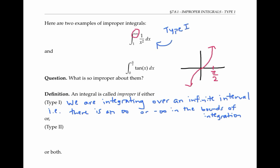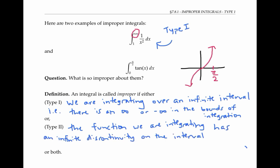A type two improper integral occurs when the function that we're integrating itself has an infinite discontinuity on the interval. By an infinite discontinuity, I mean the function is going to infinity or negative infinity — this is also called a vertical asymptote. This vertical asymptote could occur in the interior of the interval we're integrating over, or as in this example, it could occur on the endpoint of that interval of integration.